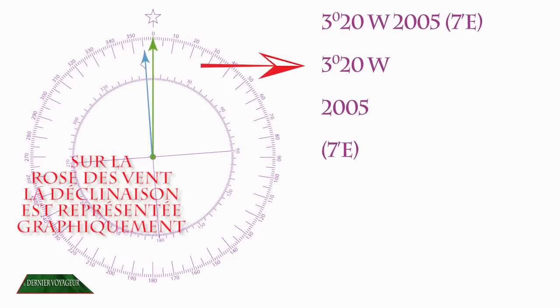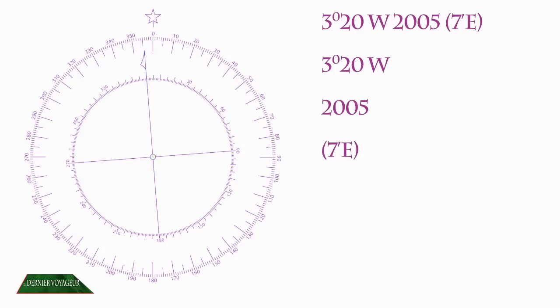L'angle en degrés minutes est la déclinaison principale pour l'année de référence. Il est accompagné d'une lettre, ici W pour ouest, et nous informe que la déclinaison est négative. L'année est l'année de référence à partir de laquelle nous appliquons les modifications. L'angle en minutes est l'augmentation ou la diminution à appliquer par année par rapport à l'année de référence à la déclinaison.